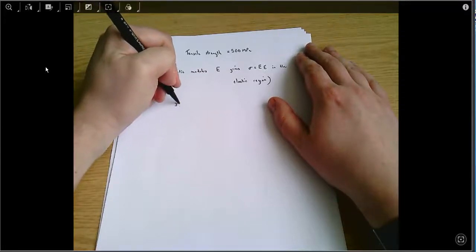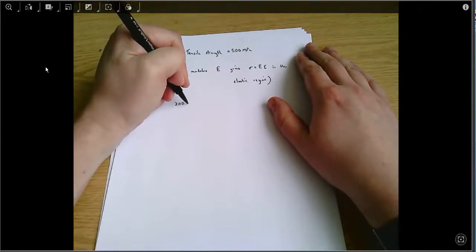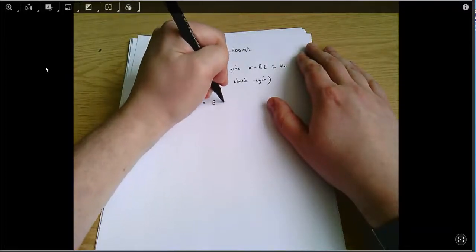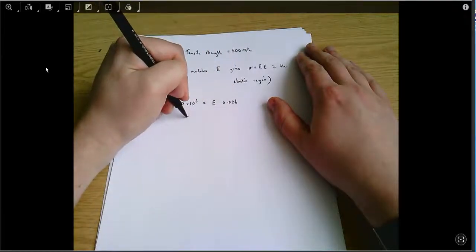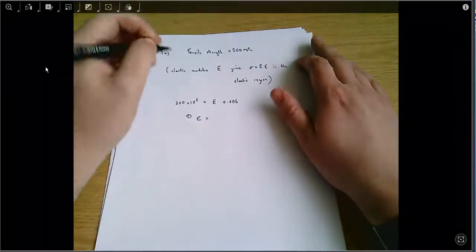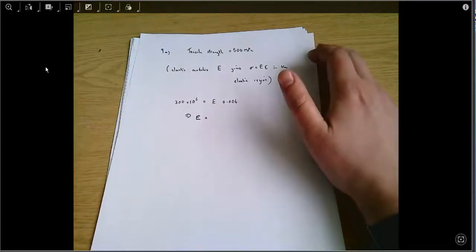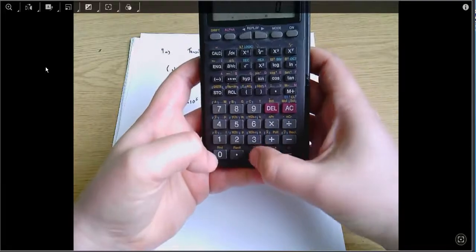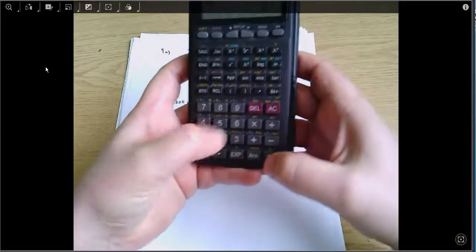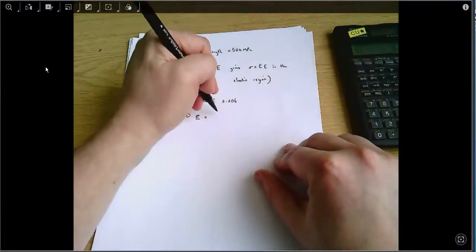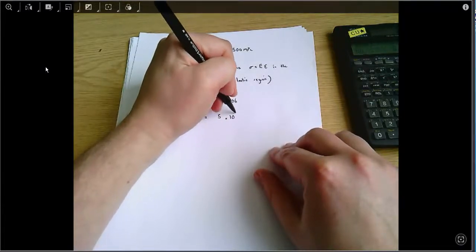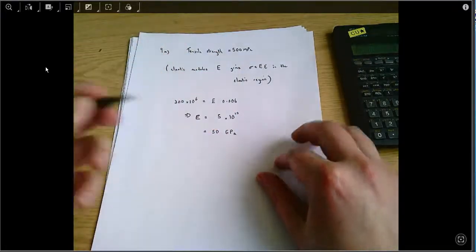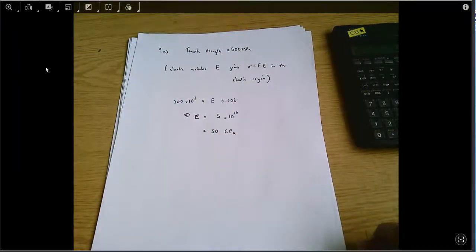But we know 300 times 10 to the 6 equals E times 0.006, which means that E equals 300 times 10 to the 6 divided by 0.006, which is 5 times 10 to the 10, which equals 50 gigapascals.